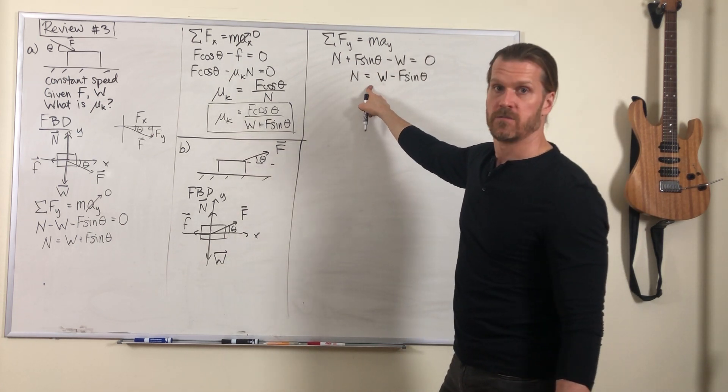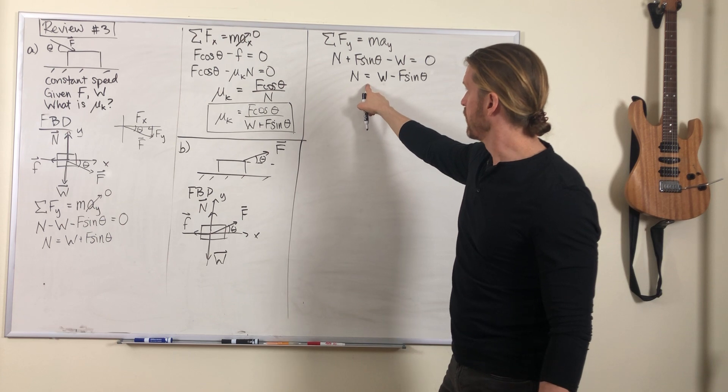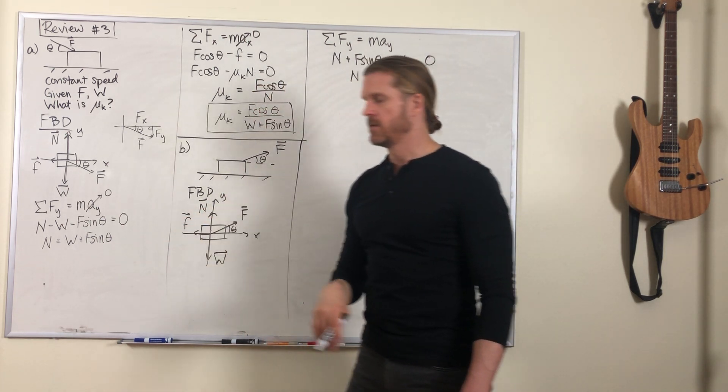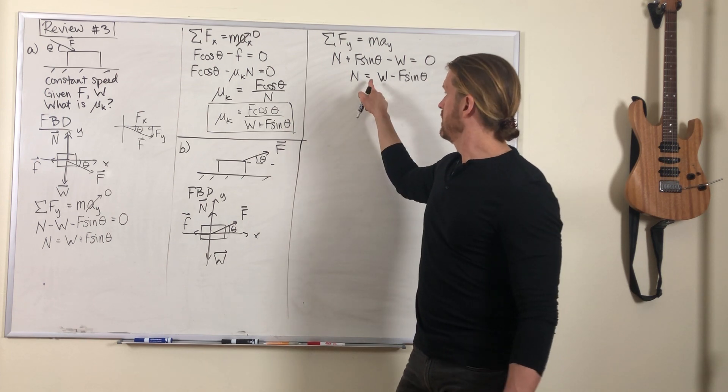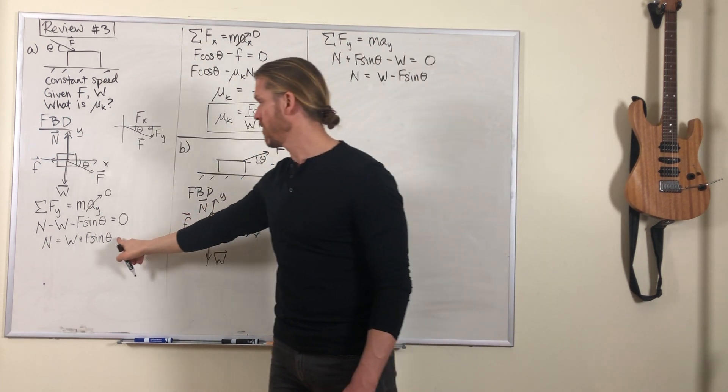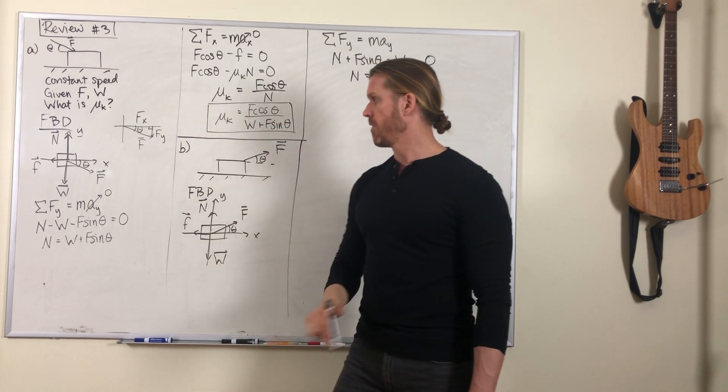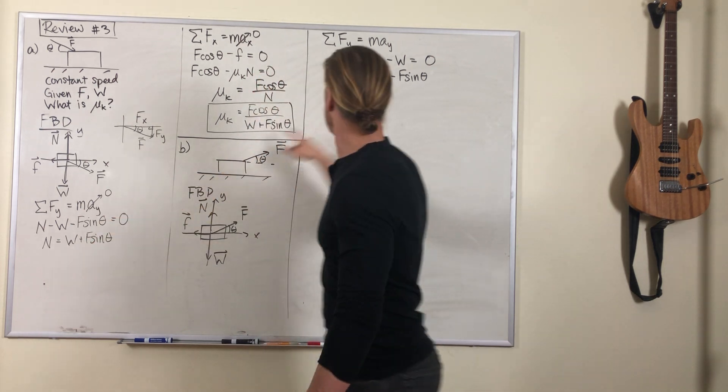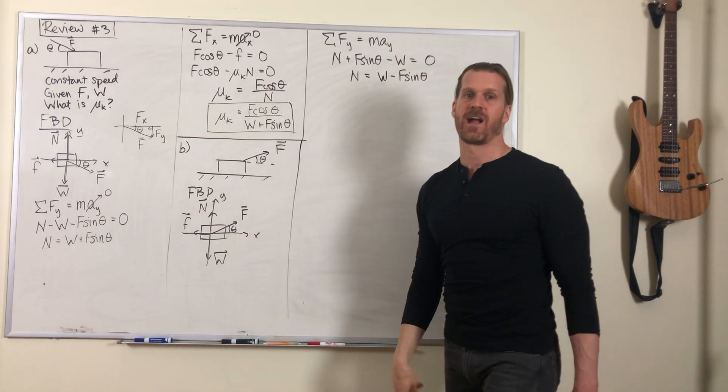So let me just compare this normal force in part b to the normal force in part a. In part b, the normal force is smaller than in part a. This term was added in part a, that same term is subtracted in part b. This makes sense.